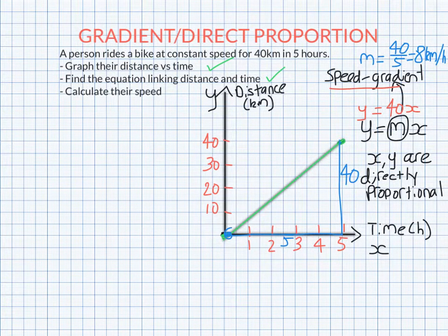So I know you knew how to calculate speed before this video, but I wanted you to see it in terms of gradient. When you're traveling at a constant speed, the distance time graph is a straight line, and speed is the gradient.